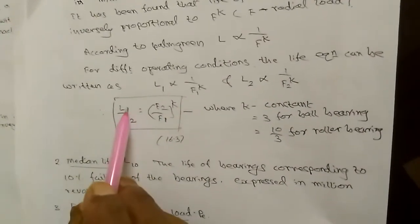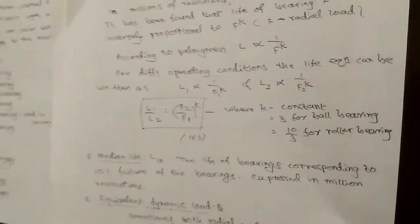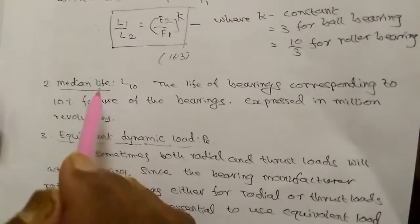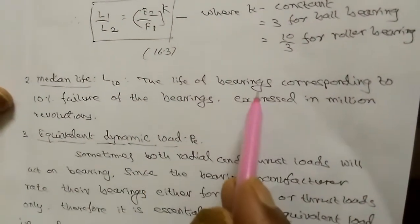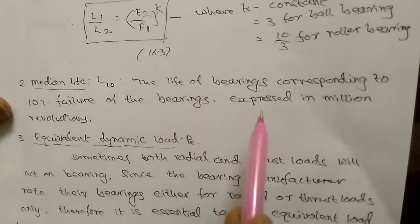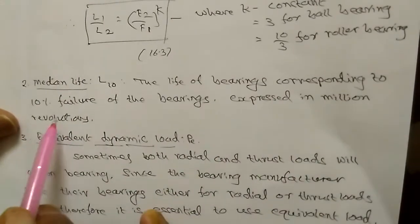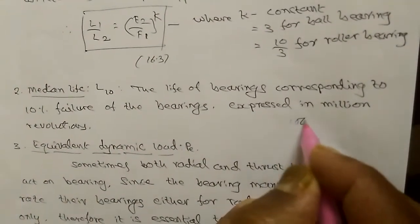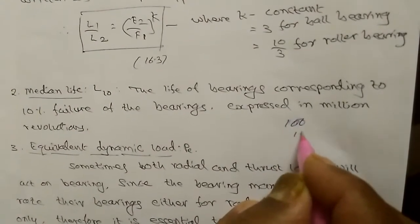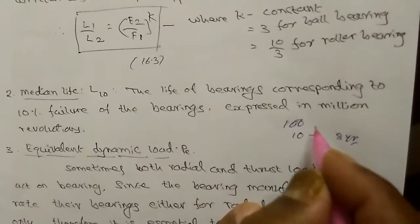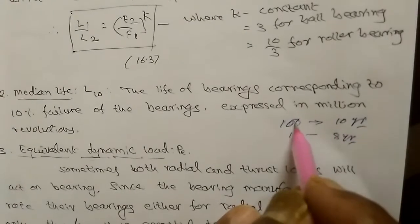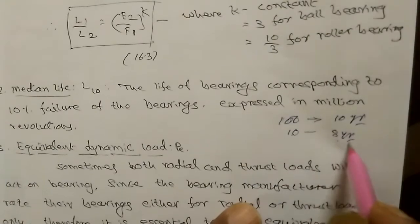The same equation is expressed in the design data handbook as F1/F2 = cube root of (L2/L1). Then we have the definition of median life, represented as L10. This is the life of the bearing corresponding to 10% failure of bearings, expressed in million revolutions. For example, if I have a batch of 100 bearings and 10 bearings fail at a life of 8 years while all 90 remaining bearings are expected to last 10 years, then this corresponds to the median life — the life at 10% bearing failure.